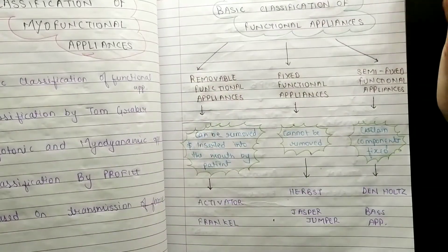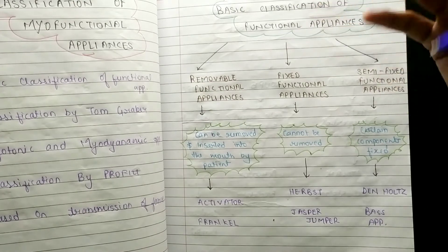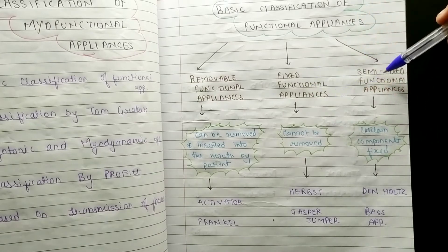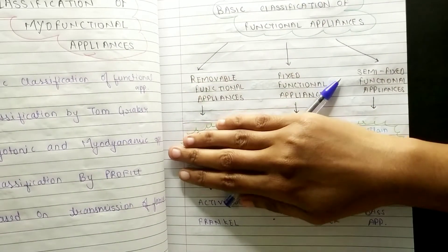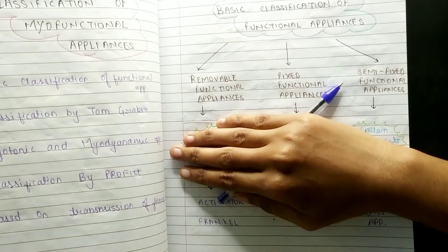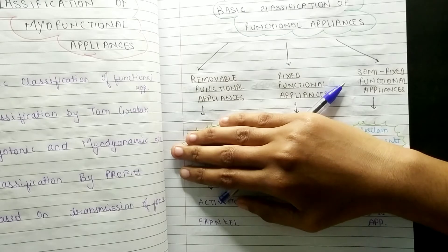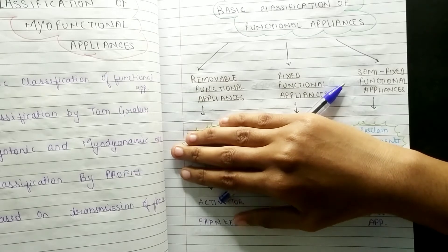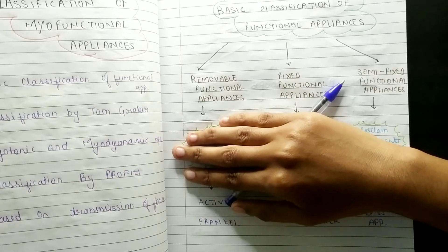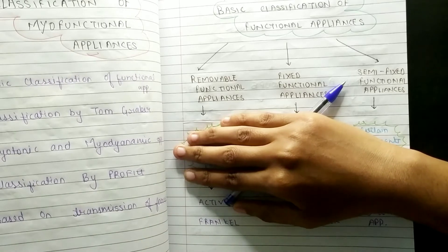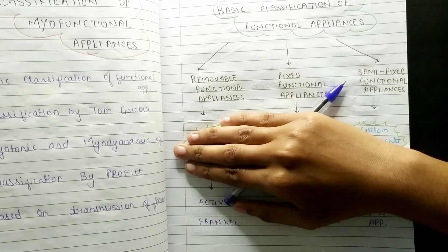Coming to the first one — the basic classification of functional or myofunctional appliances — it is divided into three categories: first is removable appliances, second is fixed functional appliances, and then semi-fixed functional appliances. Removable appliances are those which patients can remove from their mouth without the help of a doctor.